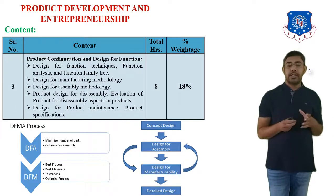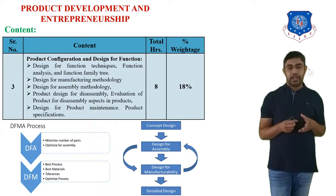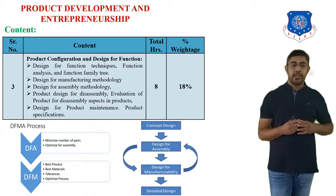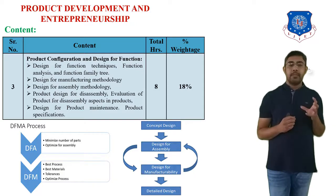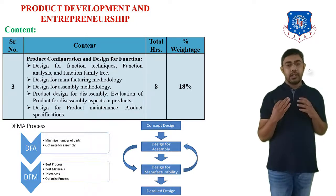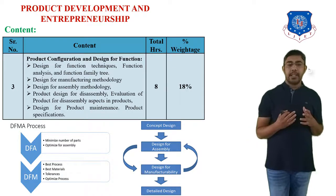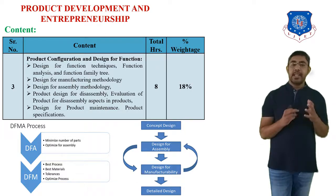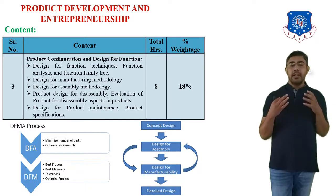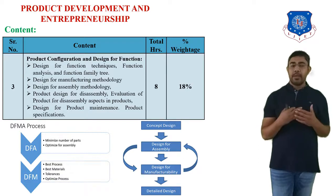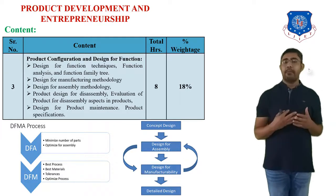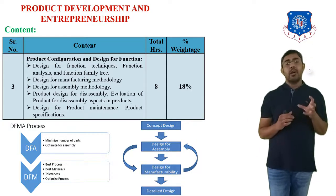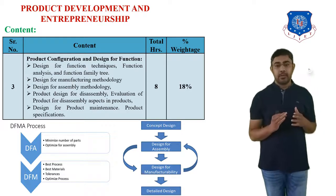The third chapter of Product Development and Entrepreneurship is Product Configurations and Design Functions. In product configurations, you have to learn product specifications and also design for functions. Design for functions means you have to consider design for assembly, design for manufacturing, design for maintenance, and design for disassembly — all these things you have to keep in mind when you develop your product.